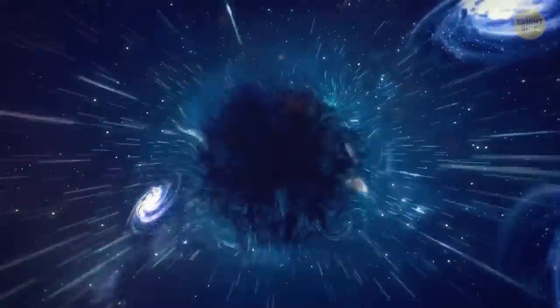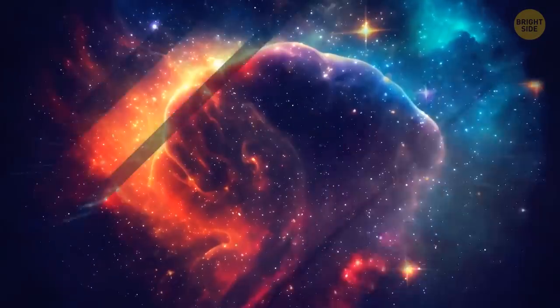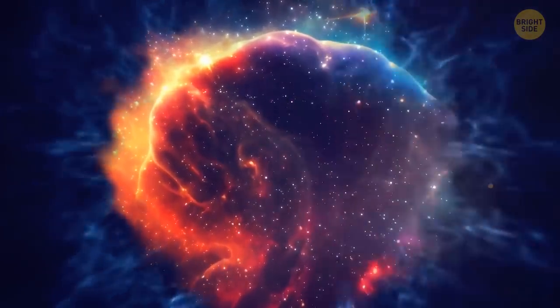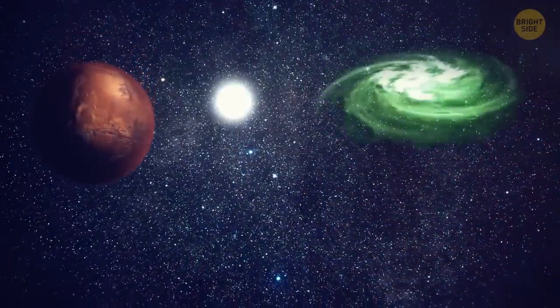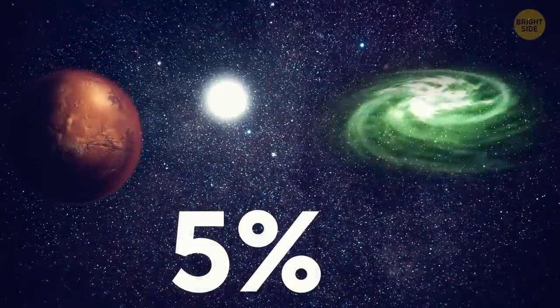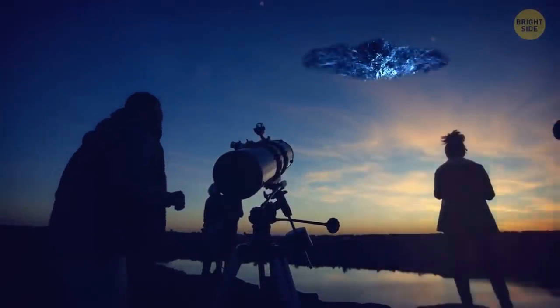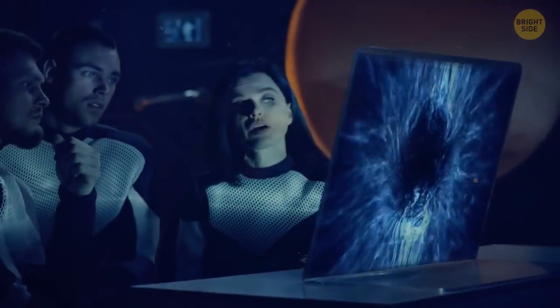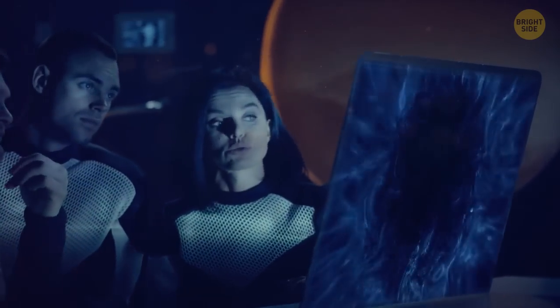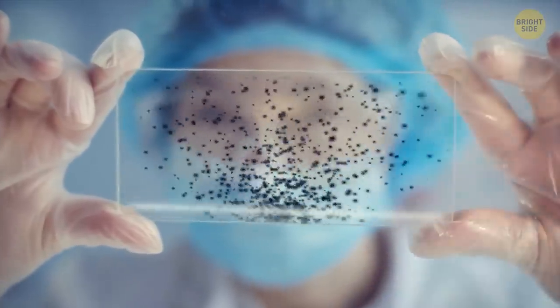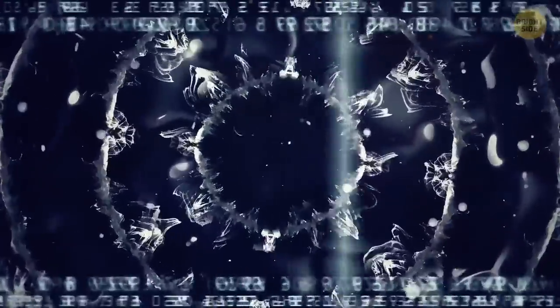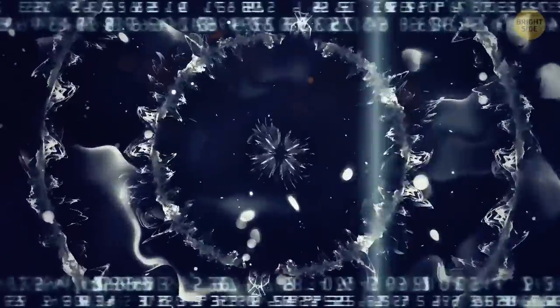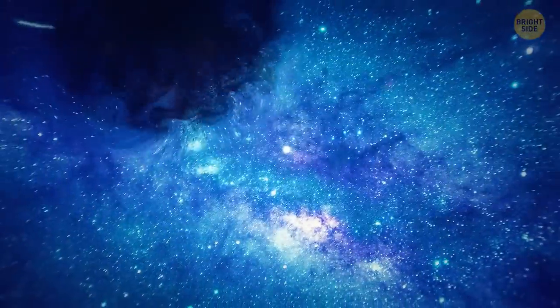If the moon was invisible, we would still suspect that it exists somewhere because its gravity affects the tides on Earth. This is also the case with dark matter. Its gravity influences the motion of galaxies and other cosmic objects. In fact, dark matter makes up about 27% of the universe. The normal matter we can see, like stars, planets, and galaxies, only makes up about 5% of the universe. So even though we can't see dark matter, there's actually more of it in the universe than everything we can see.